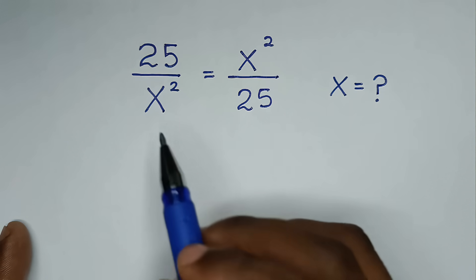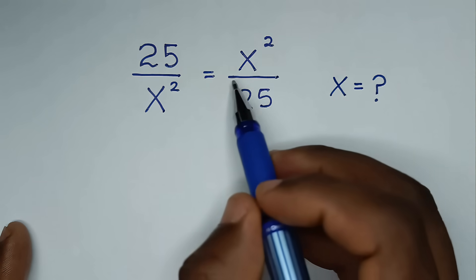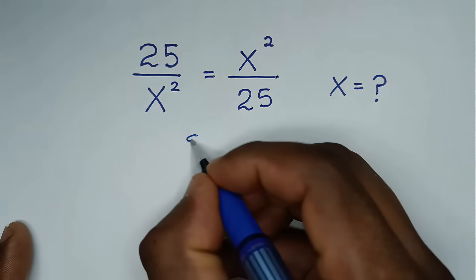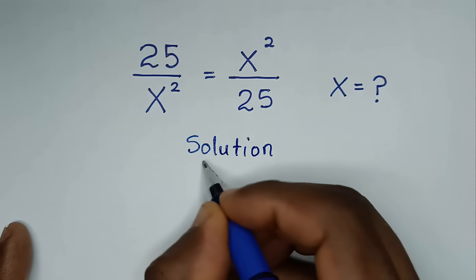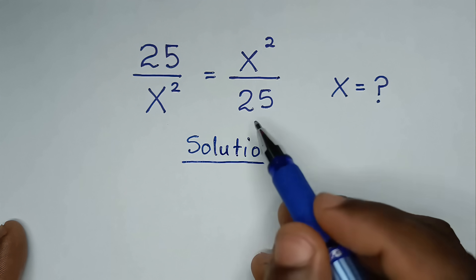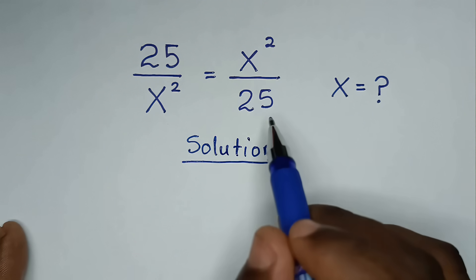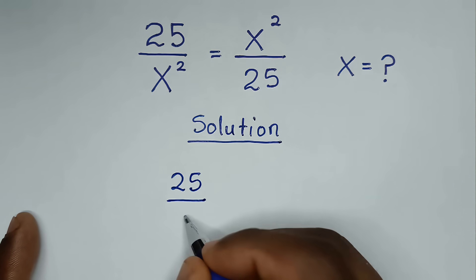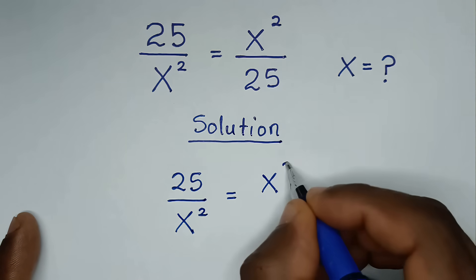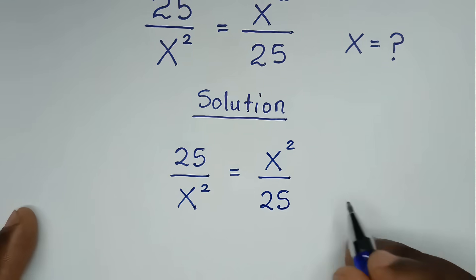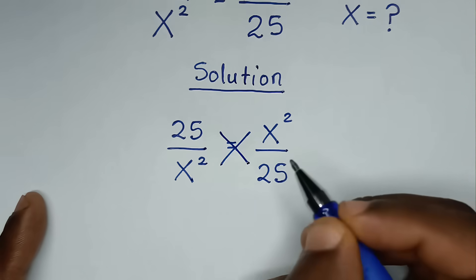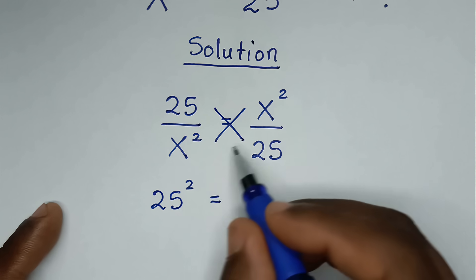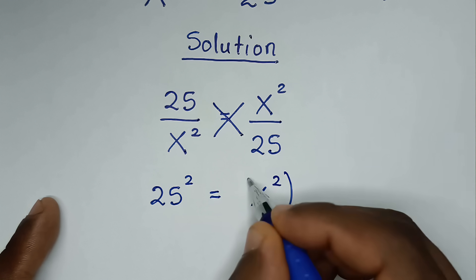Now let's solve the second math problem, which is 25 over x squared is equal to x squared over 25, to find the values of x. I will use a different method from the first solution. We cross multiply, so 25 times 25, which is 25 squared, is equal to x squared times x squared, which is (x²)².